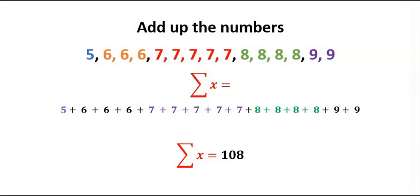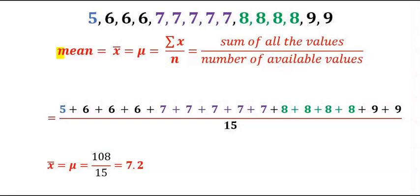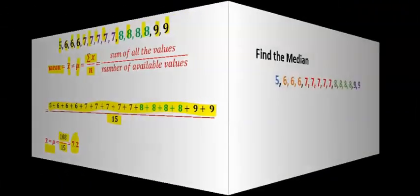Next, add up the numbers. Here, sigma Σ is usually used to denote the sum of the added numbers, and here we have the sum to be 108. Next, to calculate the mean, use the formula x̄ or the Greek word μ, which simply means the sum of all the numbers over the total number. Here, the sum of all the numbers is 108 and the selected numbers is 15. Hence, our mean is 7.2.